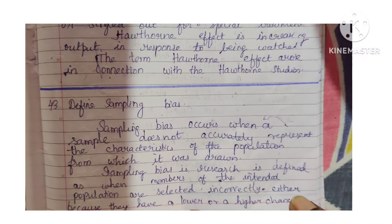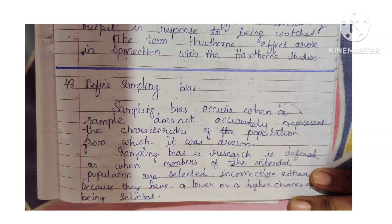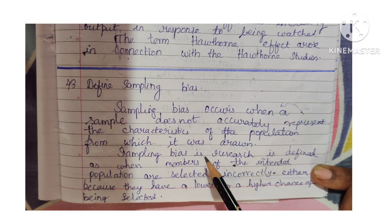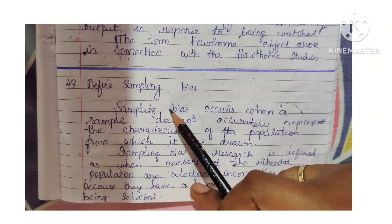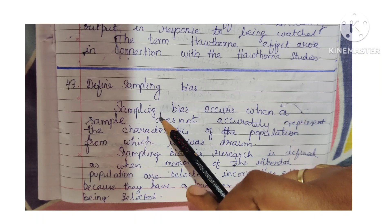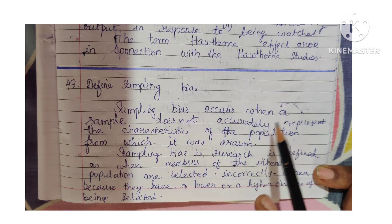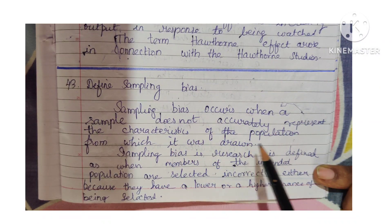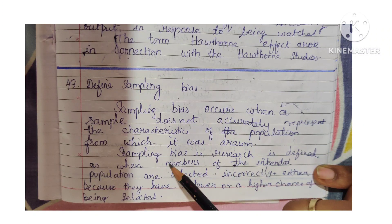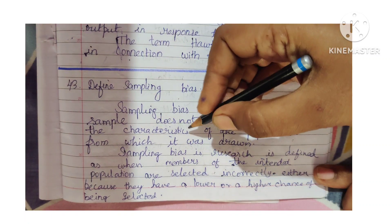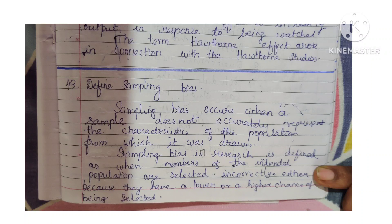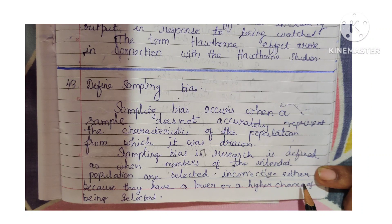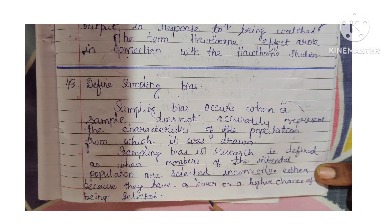Question 43: Define sampling bias. Sampling bias occurs when a sample does not accurately represent the characteristics of the population from which it was drawn. Sampling bias in research is defined as when members of the intended population are selected incorrectly, either because they have a lower or higher chance of being selected.